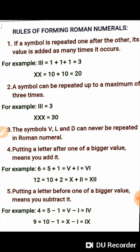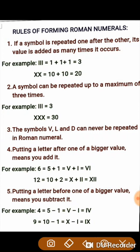We have to learn these rules for forming Roman numerals further. The first rule says, if a symbol is repeated one after the other, its value is added as many times as it occurs. For example, if we have to write number 3, it is 1 plus 1 plus 1, so it is written as III. Another example: 20 can be written as 10 plus 10, and since 10 is represented by X, 20 is written as XX.